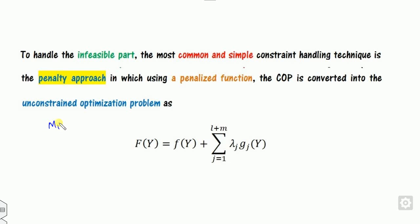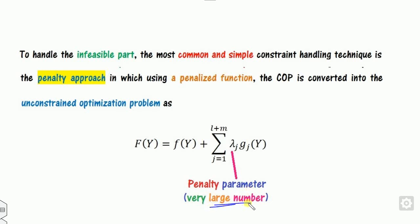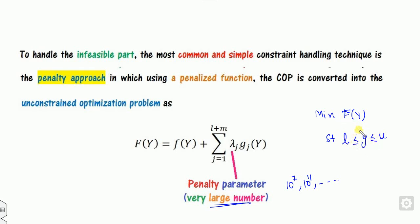Remember, I am discussing the minimization problem. If your objective function is a maximization problem, instead of the plus sign you use a negative sign. Here, g is the constraint, and lambda is the penalty parameter — a very large number, such as 10^7 or 10^11. Once you apply this, your task becomes minimizing f(y) subject only to lower and upper bounds, making it an unconstrained optimization problem that allows use of PSO, artificial bee colony, and other algorithms.